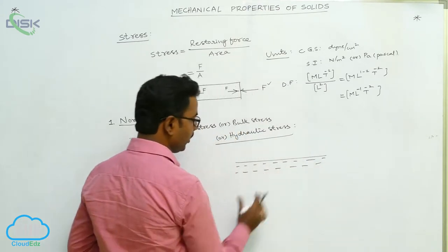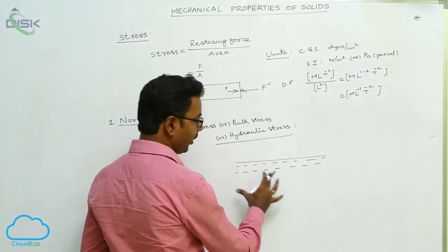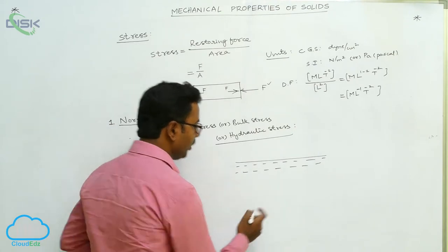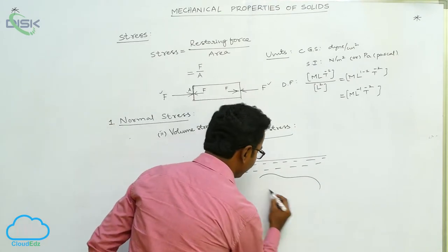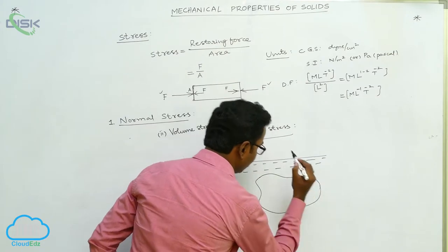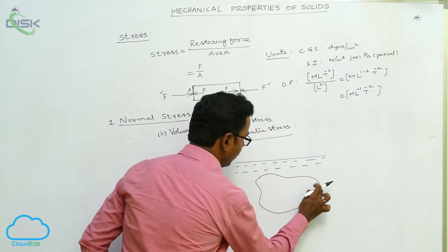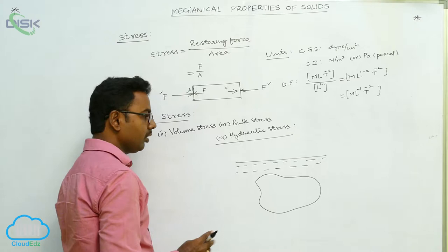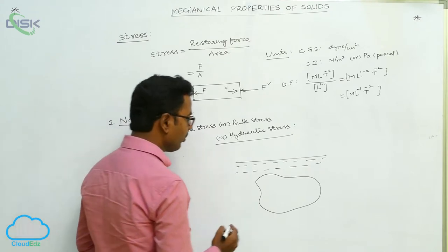Suppose it is a container. In the container we contain some liquid here. Now any object is immersed in it, like this shape. Actually what happens here? Now whenever an object is completely immersed in liquid, then what happens?